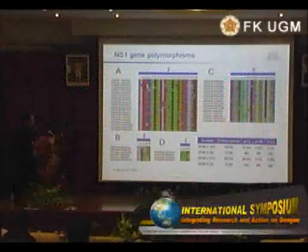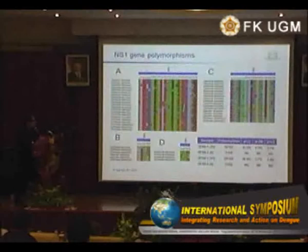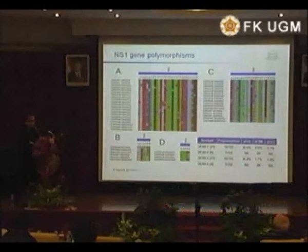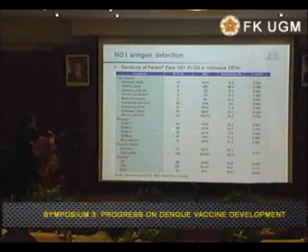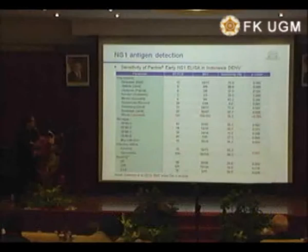For the NS1 gene polymorphism, we found quite a lot of polymorphism in all of the Indonesian dengue viruses, but most of the polymorphism is constrained — it is conserved polymorphism not causing the virus to evolve strangely. Given the presence of lots of polymorphism, we would like to correlate this with the NS1 ELISA data, since we recently performed an evaluation of the PenBio NS1 ELISA sensitivity.